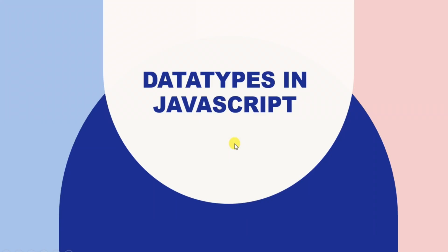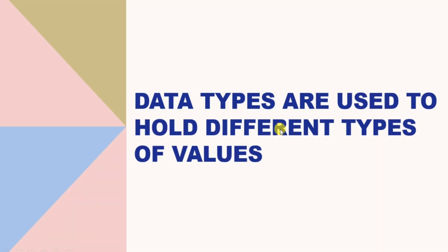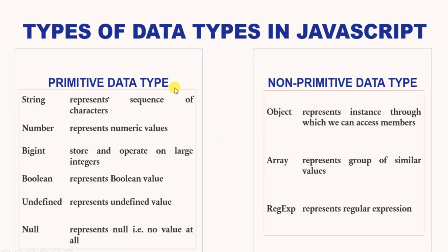Welcome to Wi-Fi Academy Tutorials. My name is Priyanka and the topic for today's discussion is data types in JavaScript. Data types are used to hold different types of values. We have two categories of data types in JavaScript: primitive data type and non-primitive data type. In this video lecture, I'm going to discuss primitive data types with a few examples.